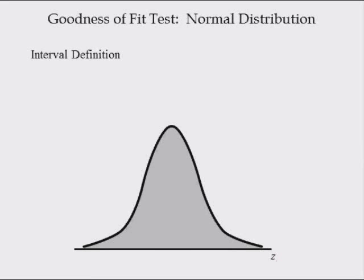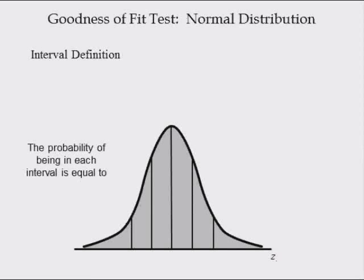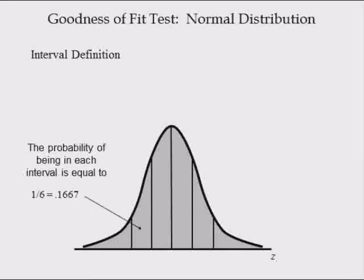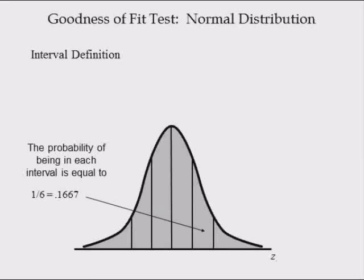To define the intervals, first draw the normal distribution, then split it into 6 intervals. The probability of being in each interval is equal to the area under the distribution, 1, divided by the number of intervals, 6. Thus, the probability of being in each interval is equal to 0.1667. This applies to all six intervals — the first through the sixth each have a probability of 0.1667.